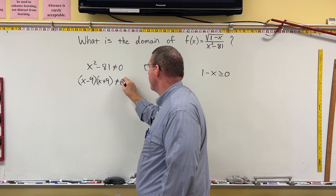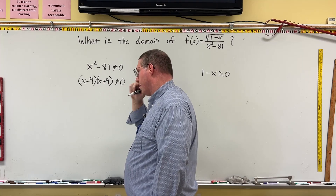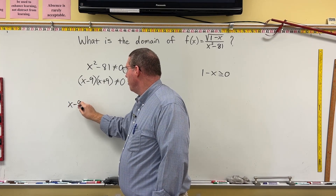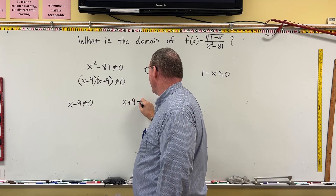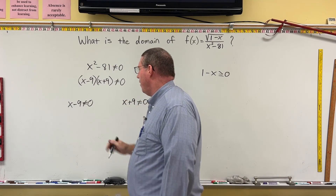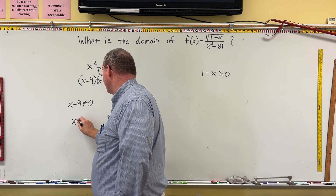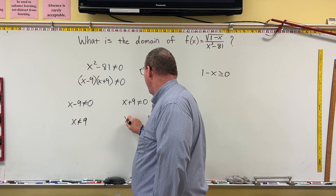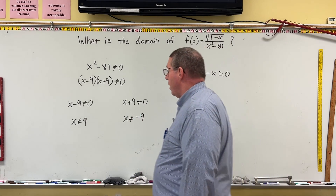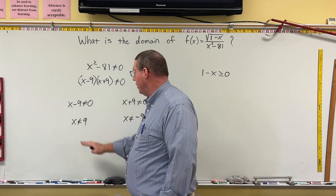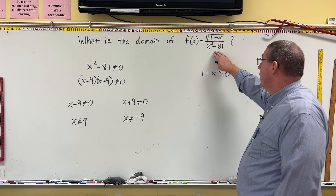Since neither factor can equal zero separately, x minus 9 cannot equal zero and x plus 9 cannot equal zero. Solving, x cannot equal 9 and x cannot equal negative 9. So all real numbers are allowed, but we have to leave out 9 and negative 9 — but that's only for the denominator restriction.